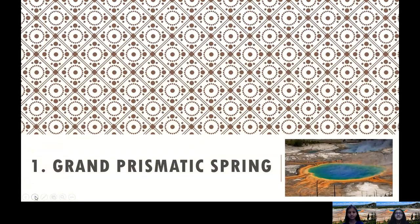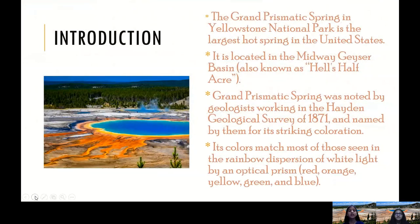Now let's start with today's topic, the Grand Prismatic Spring. The Grand Prismatic Spring is one of the main hot springs of Yellowstone National Park and is the largest hot spring in the United States. It is located in the Midway Geyser Basin, also known as Hell's Half Acre. The Grand Prismatic Spring was noted by a geologist working in the Hayden Geological Survey of 1871 and named for its striking coloration.